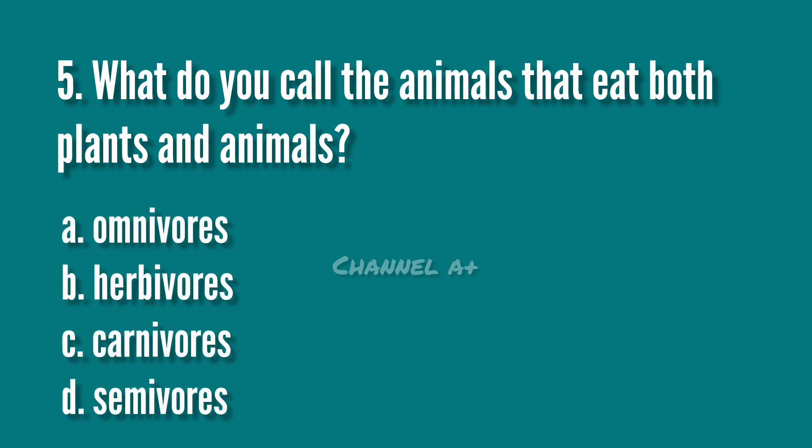What do you call the animals that eat both plants and animals? A. Omnivores. B. Herbivores. C. Carnivores. D. Semivores. The answer is A. Omnivores.